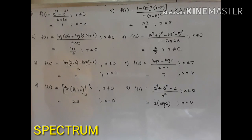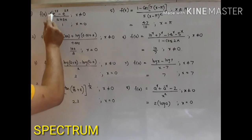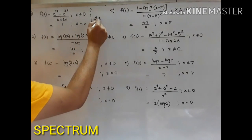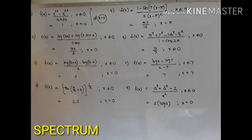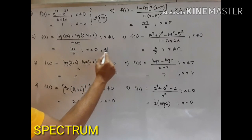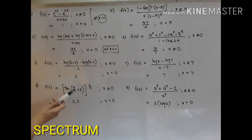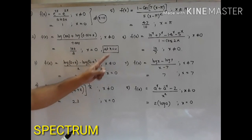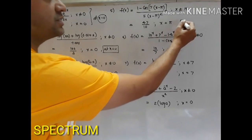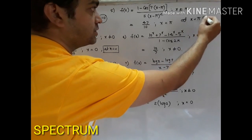The first type of question, which is very important, is where a function is given to you and you are asked to discuss continuity at a certain point. For example, in the first problem, the function is given and they ask us to discuss continuity at x equal to 0. The second problem also asks continuity at x equal to 0. Similarly, questions 3 and 4 ask continuity at x equal to 0, and here they ask continuity at x equal to pi.